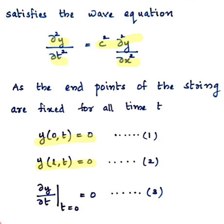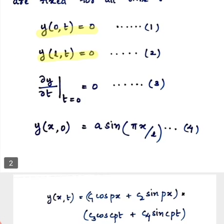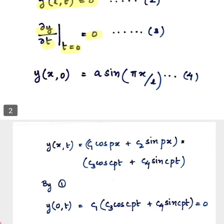The string is released from rest, so we have initial velocity given by ∂y/∂t at time t equal to zero is also equal to zero. And the last condition is y(x,0), that means at time t equal to zero, displacement at any point x is equal to a sin(πx/L), which is given in the equation.